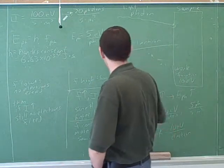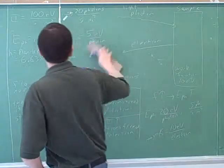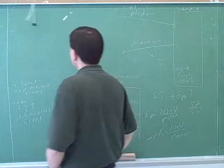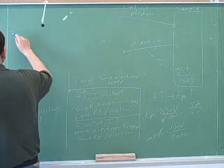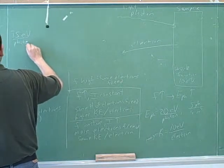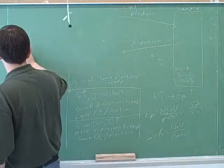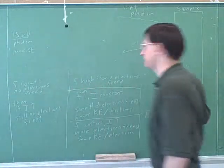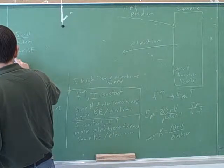Okay. Now, the basic equation here, then, is... So let's say we're shooting 15 electron volts per photon. Here's the work function is 10 electron volts. What would be the maximum kinetic energy of the freed electrons?